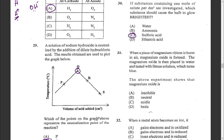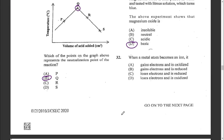Question thirty-one: when a piece of magnesium ribbon is burnt in air, magnesium oxide is formed. The magnesium oxide is then placed in water and tested with litmus solution, which turns blue. This shows that magnesium oxide is basic. The answer is D.